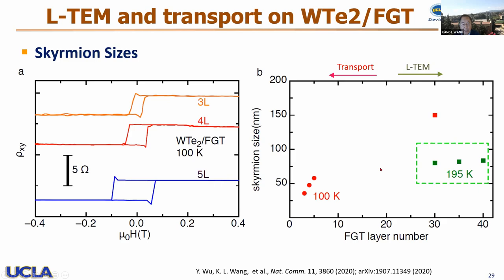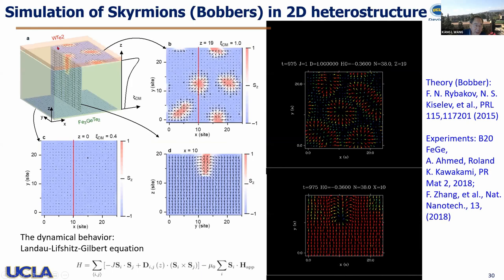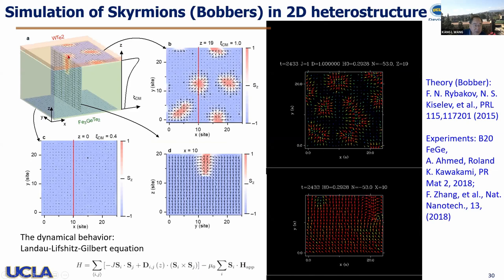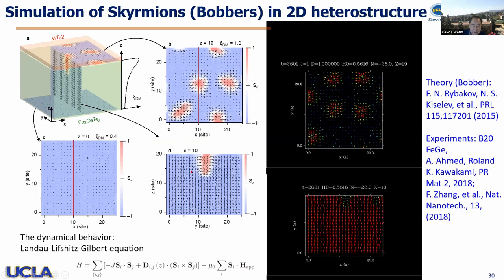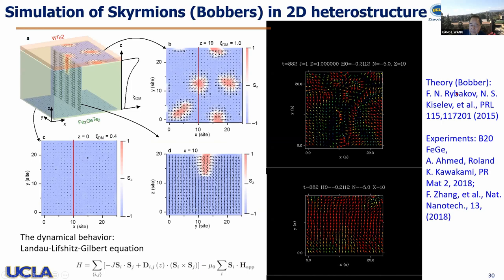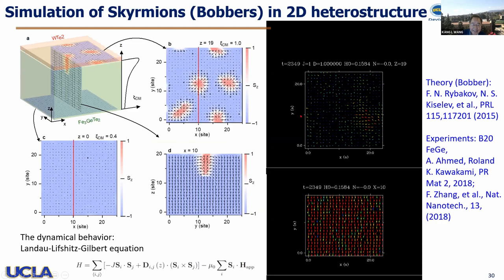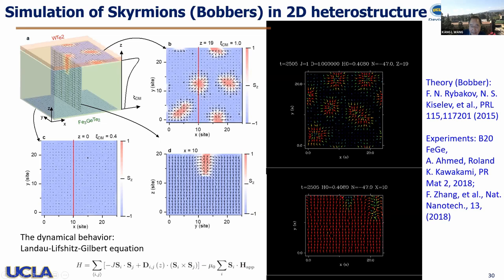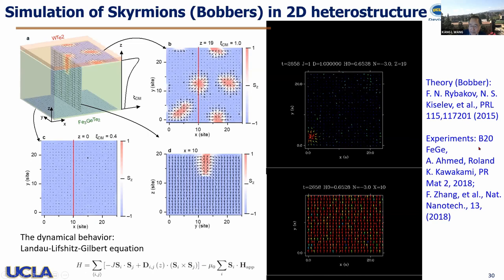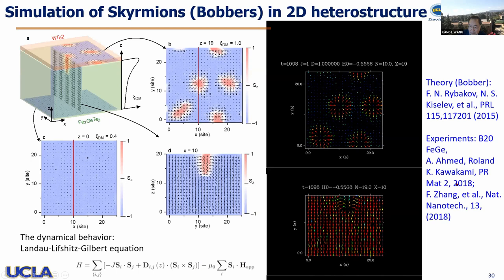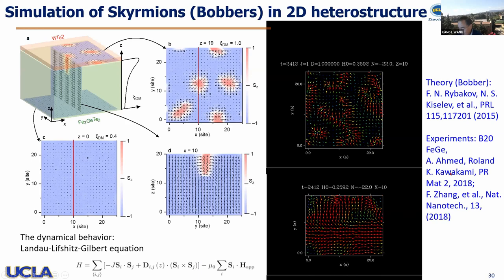We have done some simulation looking at this particular structure with tungsten telluride on top and FGT on the bottom at different thickness. We think this is a structure coming through the bulk, and the simulation shows the structure going down in depth. This is probably similar to what theory proposed by the Kiesauf group in 2015 — a spin texture not quite a skyrmion on the surface, but also with a chiral structure in depth — and experimentally shown in bulk iron germanide by Kawasaki's group and also FGT's group, and remains to be further explored.